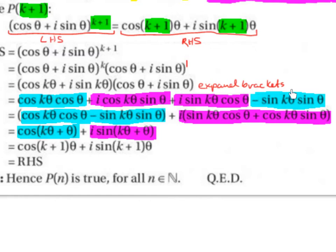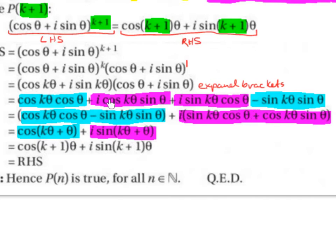Now we group the terms. We group the real parts together: cos kθ cos θ minus sin kθ sin θ (no i in either term). Then we group the imaginary terms: since i is common to both, we factor it out to get i(sin kθ cos θ + cos kθ sin θ).